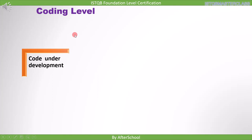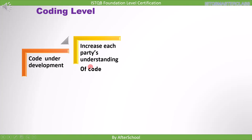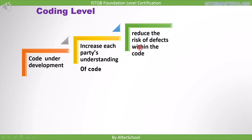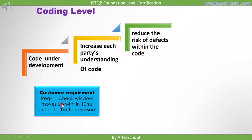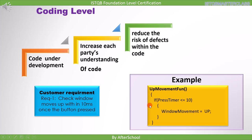Now let's discuss the third level of testing during the development process, and that is the coding level. So how does testing coding contribute to success? In the coding level, you have code under development. The code is being developed and you will perform static testing on it. The intention is to increase the understanding of that piece of code, which reduces the risk of defects within the code. So if there are any defects, we can find them out by reviewing the code through static testing. Let's bring up our example: the requirement is that a check window moves up within 10 milliseconds once the button is pressed. For this requirement, the developer has written some code — try and see if you can spot the mistake.